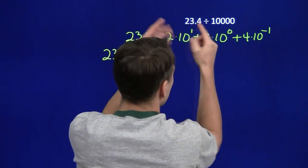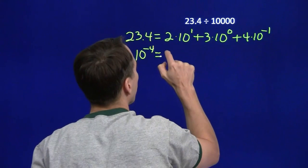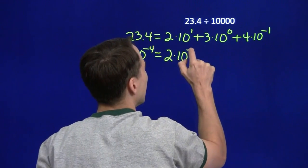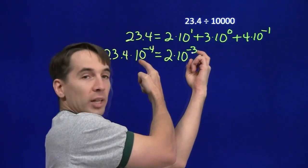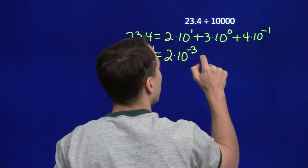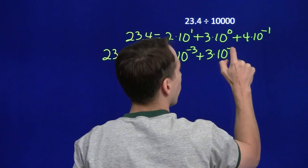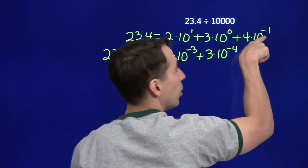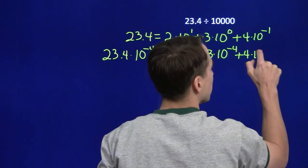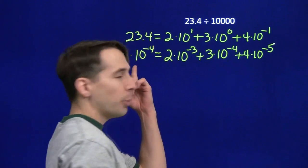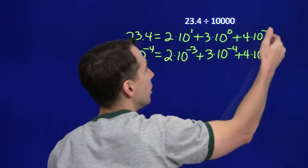We multiply each term by 10 to the minus 4. The first term: 10 to the first times 10 to the minus 4 — add the exponents — 1 plus negative 4 gives 2 times 10 to the negative third. We just moved the exponent down by 4. Do the same thing with the next term: 3 times 10 to the minus 4. Multiply 10 to the zero times 10 to the minus 4, then 10 to the minus 1 times 10 to the minus 4 gives 10 to the minus fifth. Multiplying by 10 to the minus 4 reduces each exponent by 4.